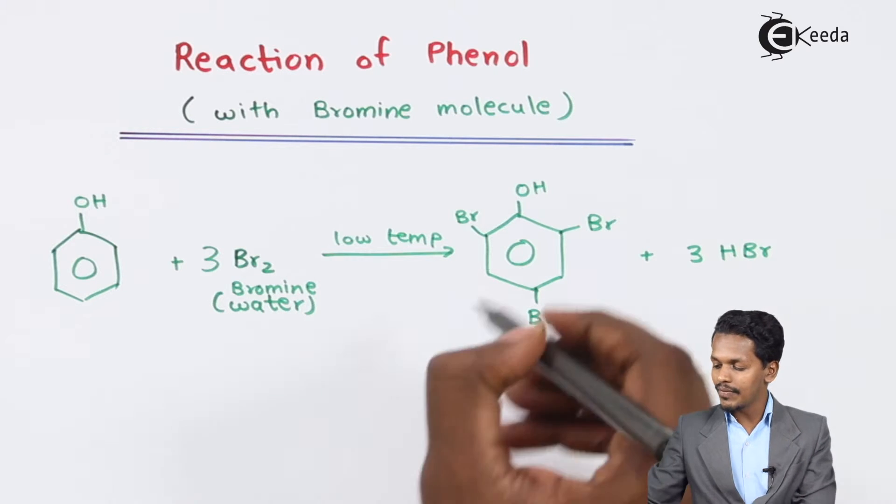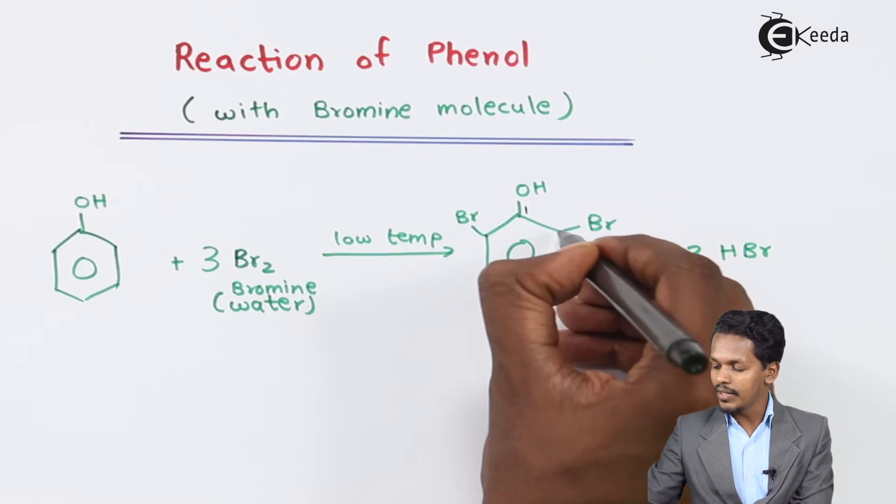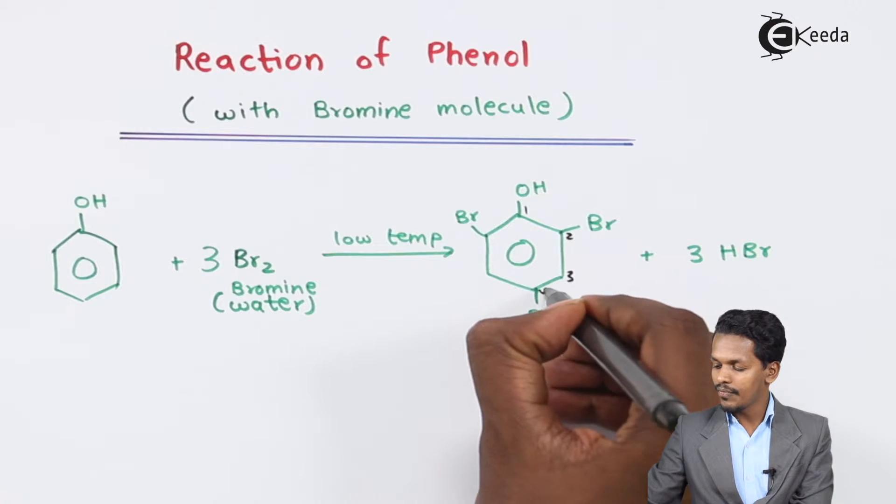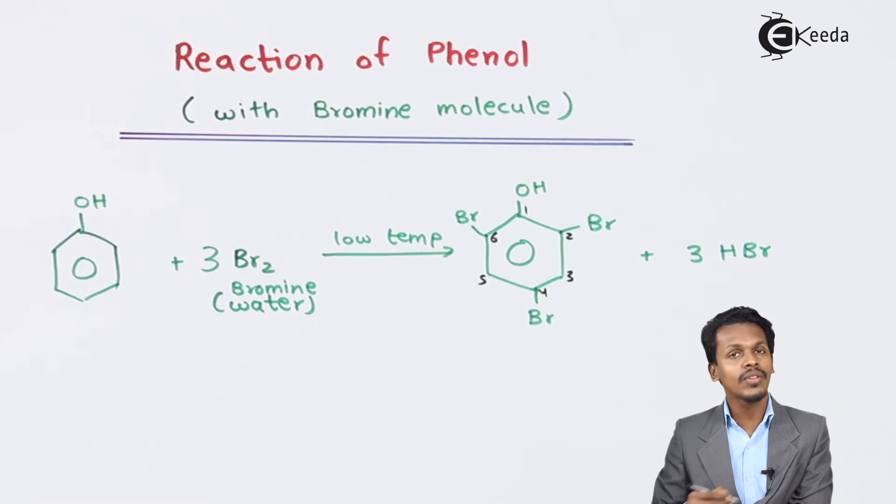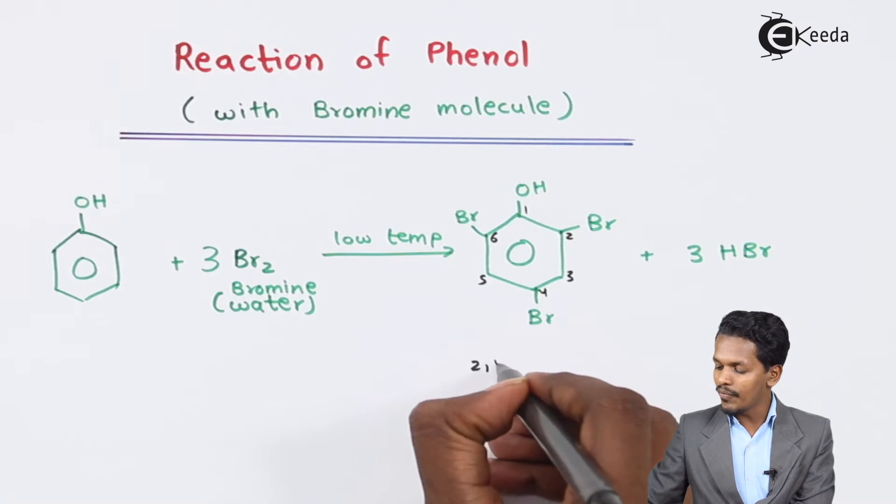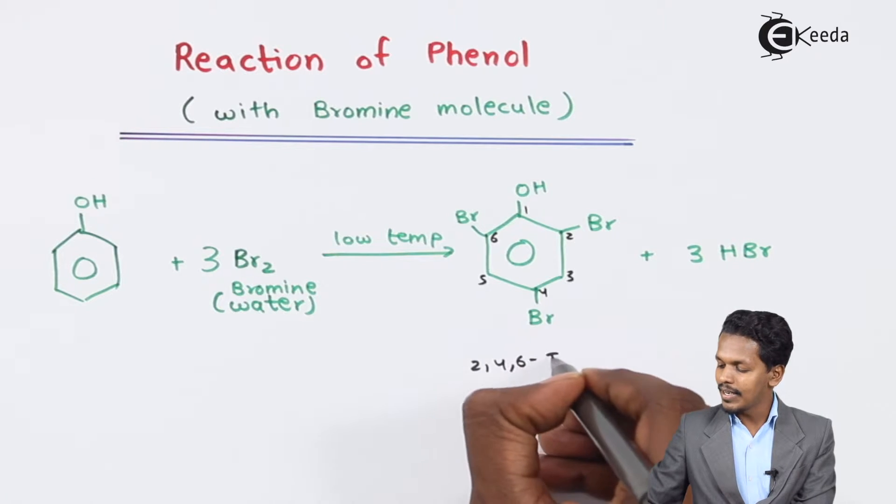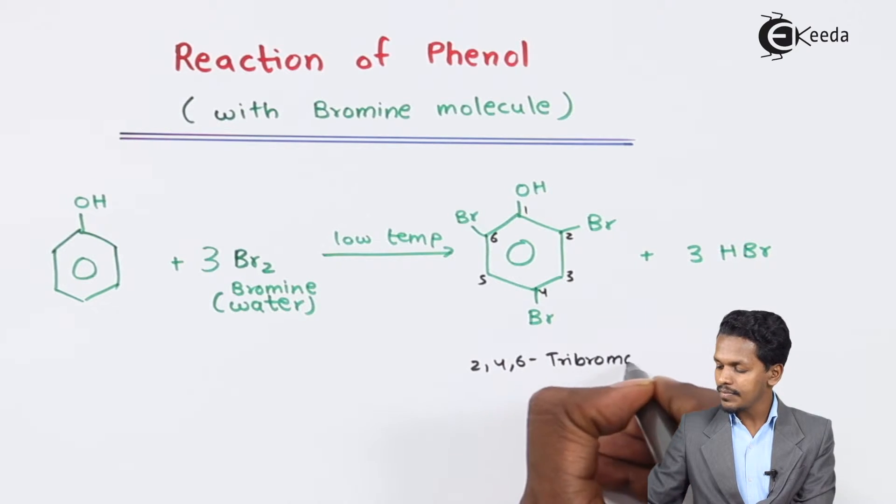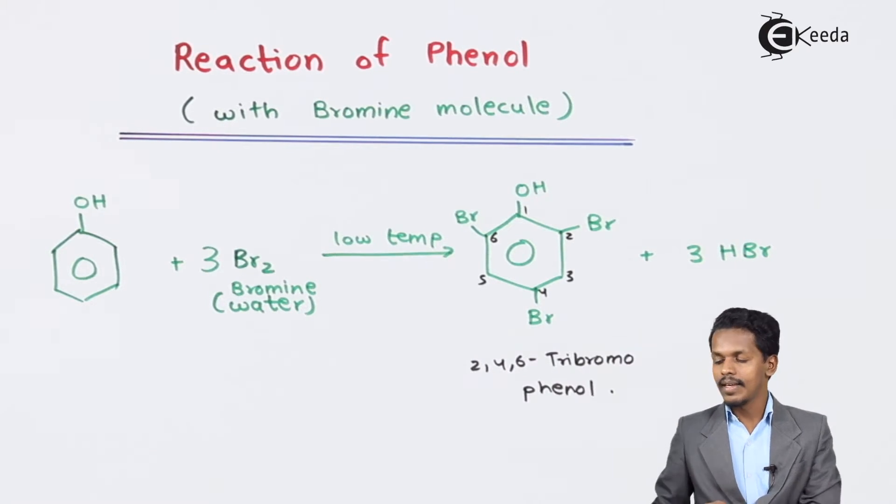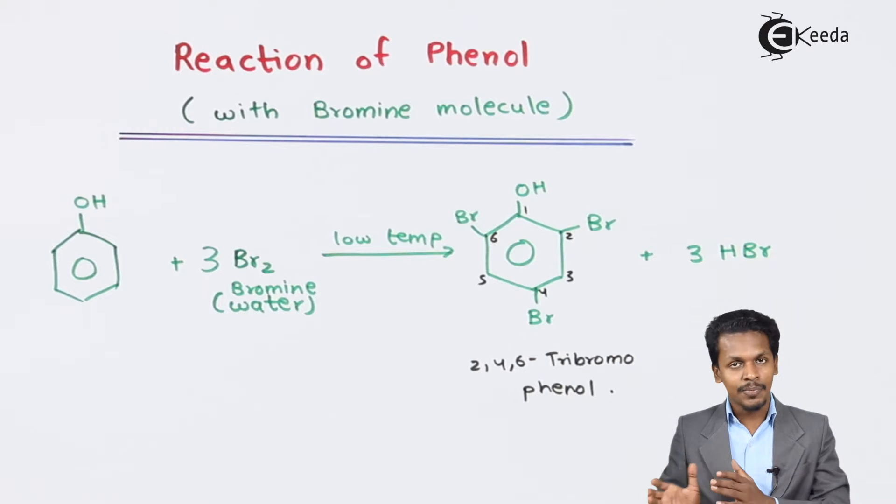So therefore the main product, the name of the product that we have is - this is carbon number one, two, three, four, five and six. So therefore we could name this as 2,4,6-tribromophenol. So this is how we can get this product.